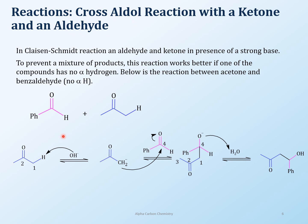You can also do cross-aldol with an aldehyde and a ketone — the same principle applies, just with different starting materials. Here is benzaldehyde and here is acetone. The reaction starts with the ketone. Benzaldehyde has no alpha proton because the phenyl ring is substituted — that carbon has no protons on it. So acetone provides the alpha proton, giving you the nucleophile, which reacts with benzaldehyde to give this product.